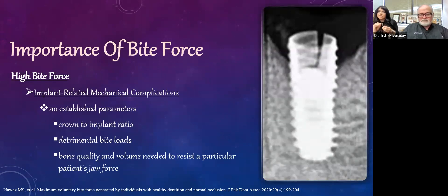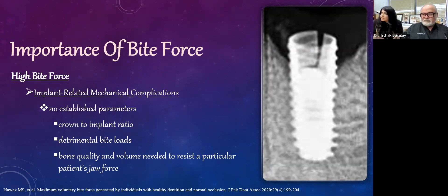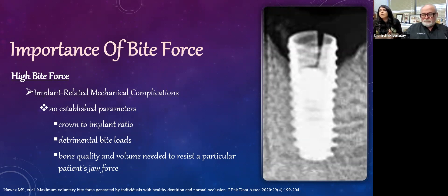For natural teeth we have documentation on ideal crown-to-root ratios and detrimental bite loads, but for implants there are no well-established parameters — no clear consensus on crown-to-implant ratio, detrimental bite loads on implants, or the bone quality and volume needed to resist a particular patient's jaw forces. If we can detect patients at higher risk of mechanical complications for implant-based care, we can engineer their cases to better maintain the implants and bone.